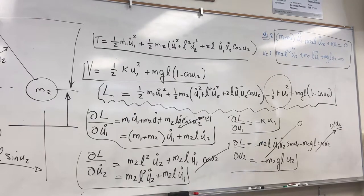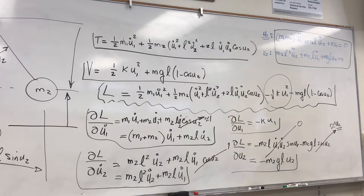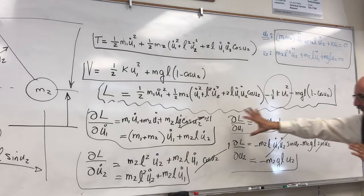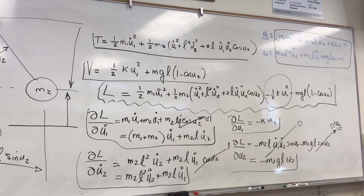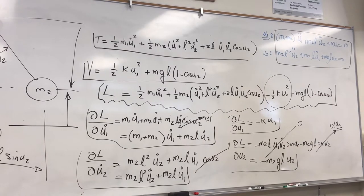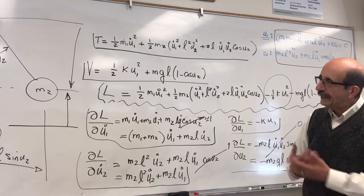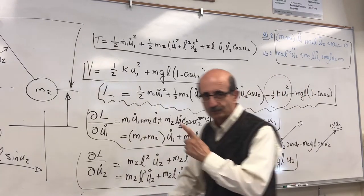For the second equation (i = 2): taking the time derivative of M2·L²·U2-dot + M2·L·U1-dot and subtracting (−M2·g·L·U2) = 0 gives: M2·L²·U2-double-dot + M2·L·U1-double-dot + M2·g·L·U2 = 0. These two equations form the simultaneous set of equations of motion. You can see how powerful Lagrange's approach is — all you did was identify the degrees of freedom, set up kinetic and potential energy, form the Lagrangian, and apply the equation.